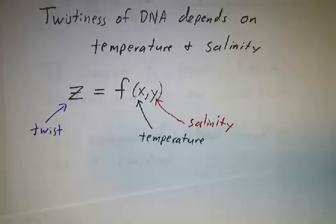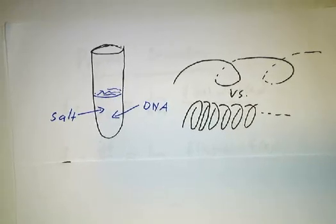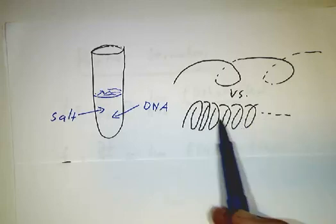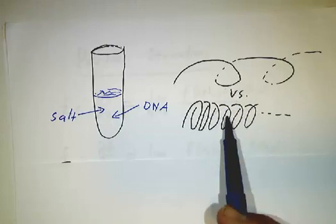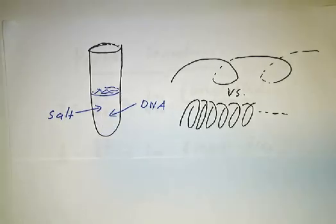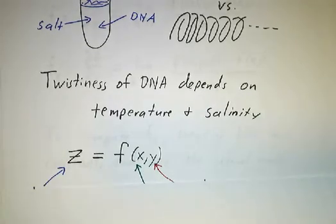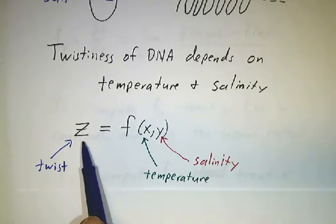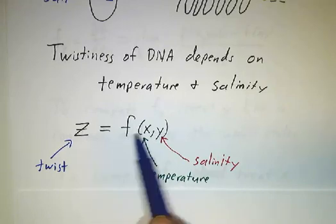So for instance, let's suppose we're doing an experiment with DNA. It turns out that the twistiness of DNA—this is exaggeration, of course, this picture—but DNA coils into these helices, and how tight the helices depends on how salty the solution is, and it also depends on the temperature. So we can write a function. If we have some mathematical measure of how twisty it is, we might call that z. We might call x the temperature and y the salinity. And we say that z is some function of x and y.